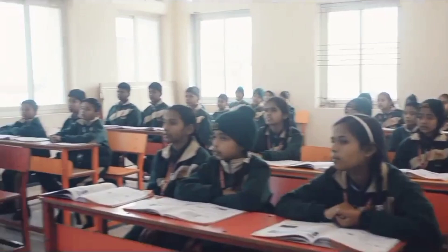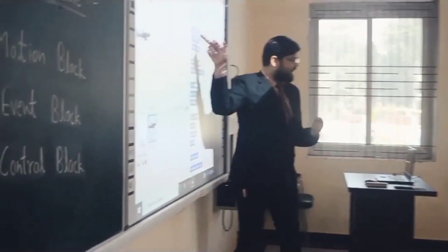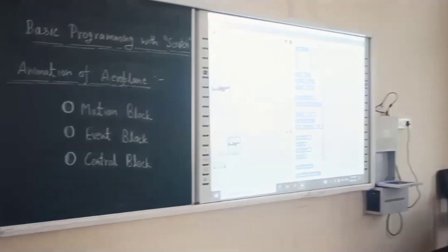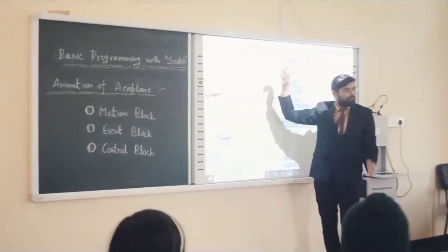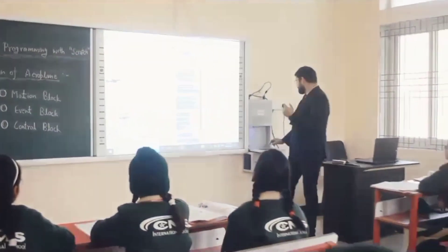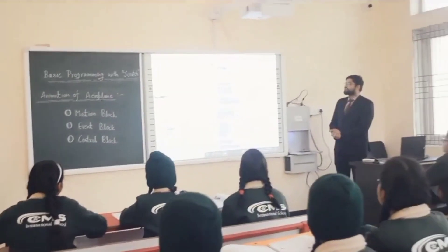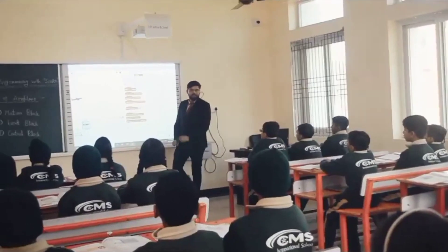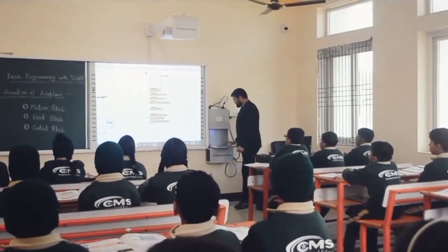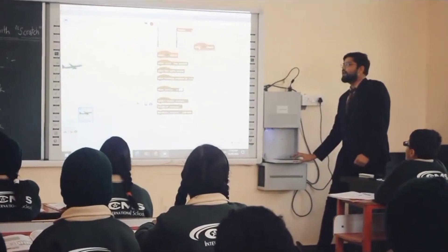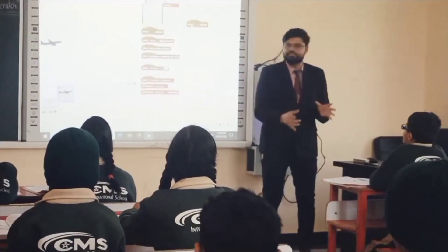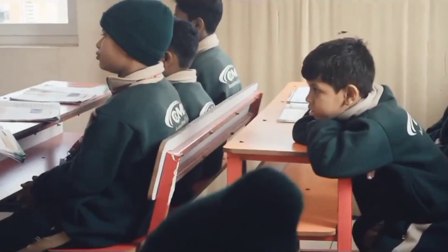We have to write some motion block, event block, and control block. In the motion block we can take 'move'. In the event block we can assign a green flag — when the green flag button is clicked. Let's go to the event section and drag that block here. This means when the green flag is clicked, our program will run. Is that clear?